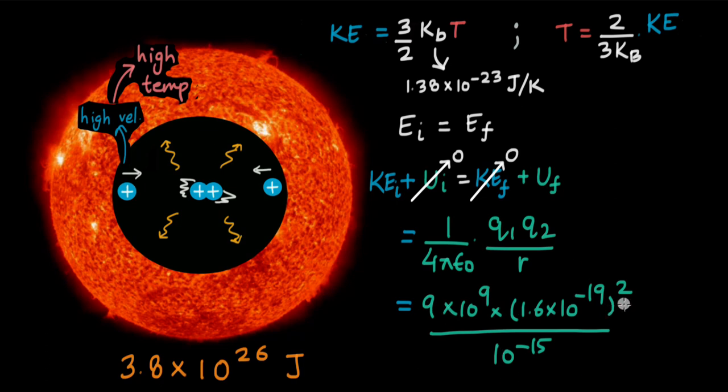We can work this out or we can just directly multiply this with 2 by 3 into Kb. That will give us the temperature, the temperature of the sun's core. So multiplying this further with 2 by 3 Kb will give us the temperature, the final temperature of the sun's core. And I encourage you to pause the video and try out this entire calculation on your own.